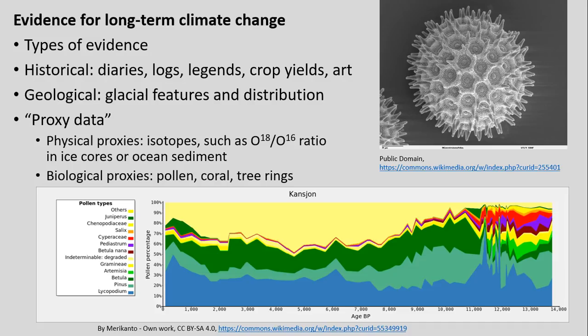Especially in this long past history, even prior to humans, we're trying to understand how Earth's climate changed in the far distant past — over tens of thousands, hundreds of thousands, millions of years before present. When we move to more recent times, hundreds of years ago or less, we might rely on things like diaries, logs, legends, crop yields, and art — all can help us piece together, almost like a puzzle, some understanding of what climate may have been like in the past.